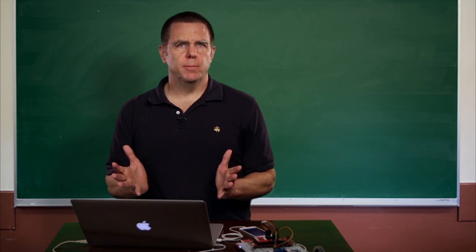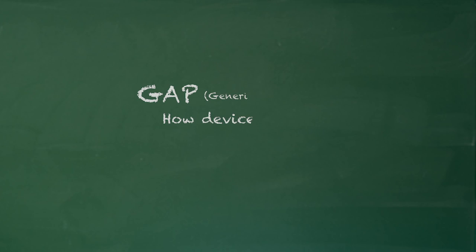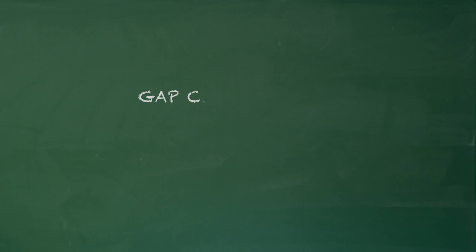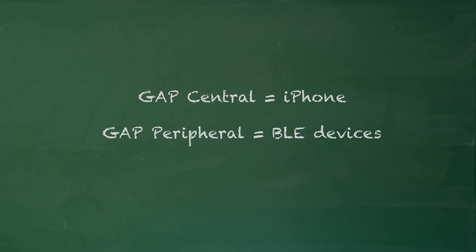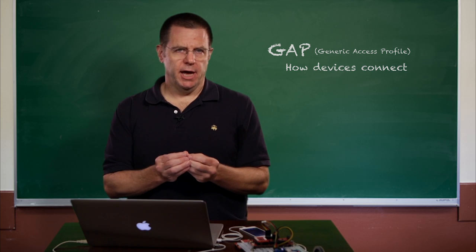The device will act as a GATT server and the GAP role will be peripheral. GAP and GATT are two of the most important concepts in understanding this whole system. You can think of GAP as the way that two devices connect together. The iPhone will serve as the GAP central and the BLE device will serve as the GAP peripheral. The GAP peripheral will advertise that it's around, and the GAP central will hear that and make the connection.